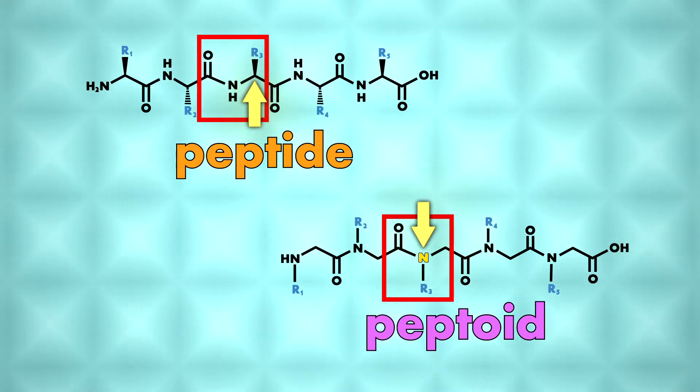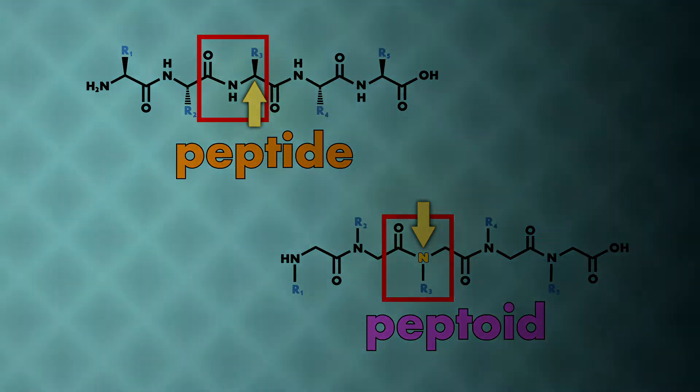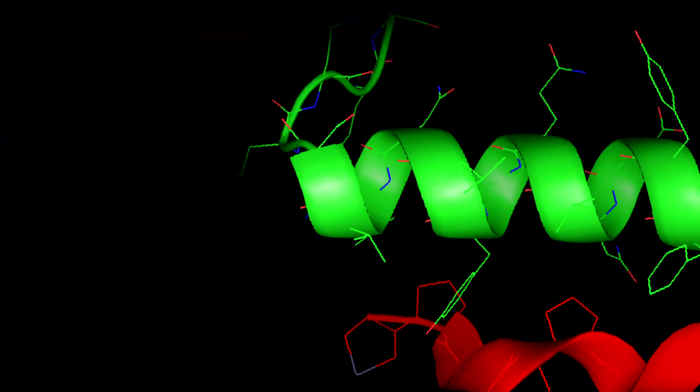This unnatural branching pattern makes peptoids very stable while still allowing peptoids to fold into various shapes like helices, loops and sheets.